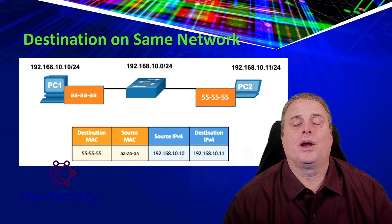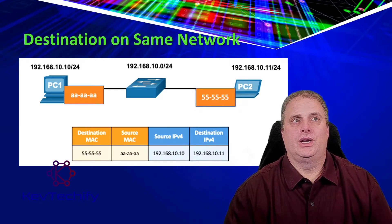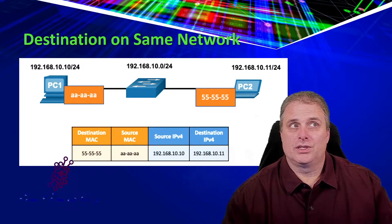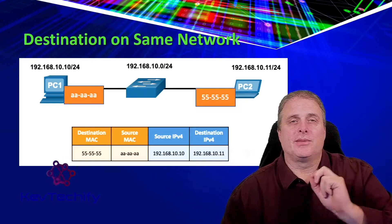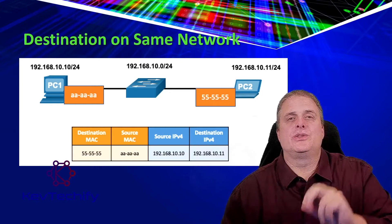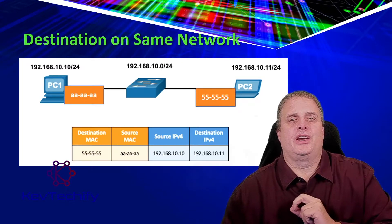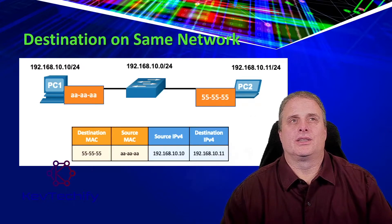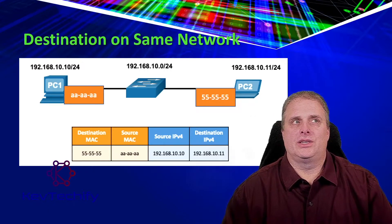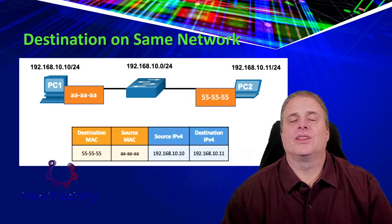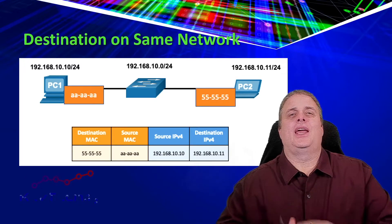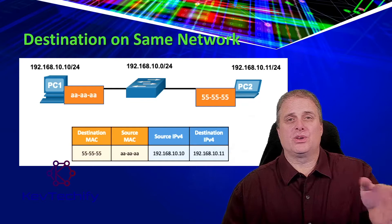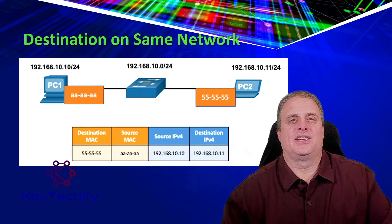There are two primary addresses assigned to each device on an Ethernet LAN. The first one is the Layer 2 physical address — that's the MAC address — used for NIC-to-NIC, or network interface to network interface, communication. The second address is the Layer 3 logical address — that's your IP address — used to send the packet from the source device to the destination device.